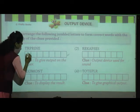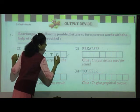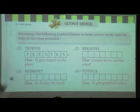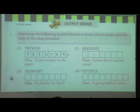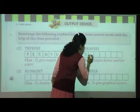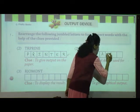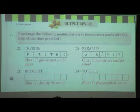What is the spelling of printer? P-R-I-N-T-E-R. Printer gives output on the paper. Next clue: output device used for sound. Which device do we use to listen to music? Speaker. Spelling of speaker: S-P-E-A-K-E-R. Next clue: to display the result. Where can we see the result? On the monitor. Spelling of monitor: M-O-N-I-T-O-R.